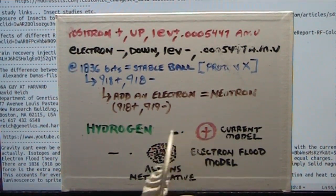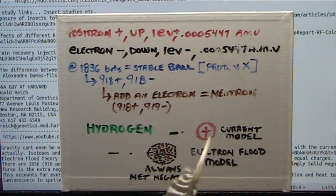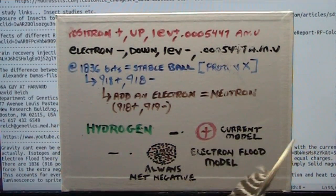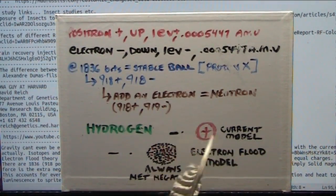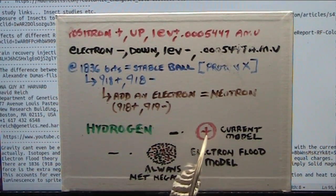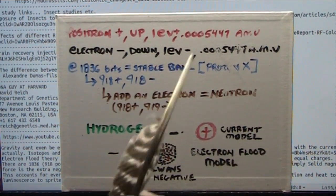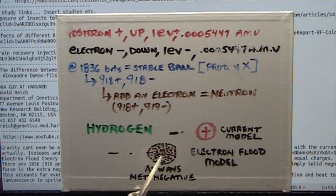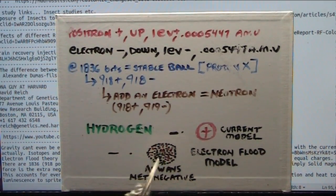And they're both the same charge — it's insanity. This would slam into that positive, first of all. Secondly, why would they be exactly the same charge when one is 1836 times as big as the other? It's total nonsense. What it really is, is that little tiny particle is the same as all the little tiny particles that add together with all the other little tiny particles that are positive. So this is nothing more than a ball of bar magnets.